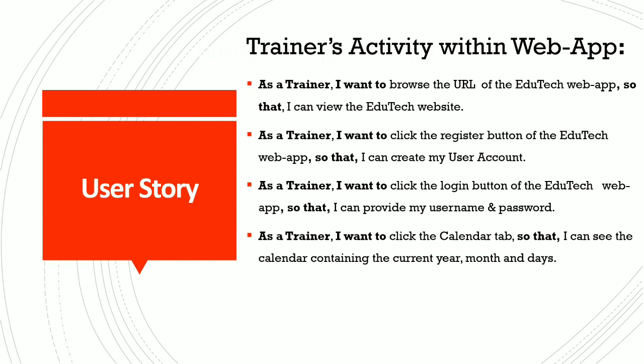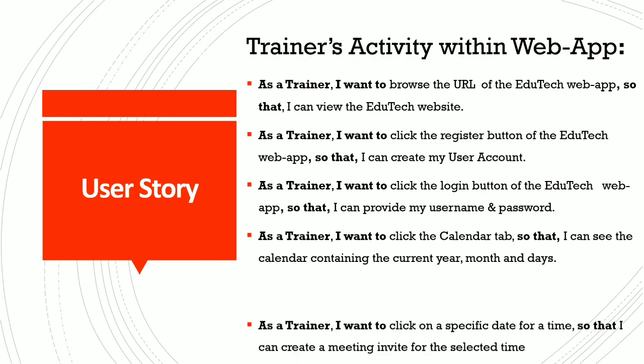The third user story is: as a trainer, I want to click the login button of the EduTech web app so that I can provide my username and password. The fourth user story is: as a trainer, I want to click the calendar tab so that I can see the calendar containing the current year, month and days. As a trainer, I want to click on a specific date and time so that I can create a meeting invite for the selected time.